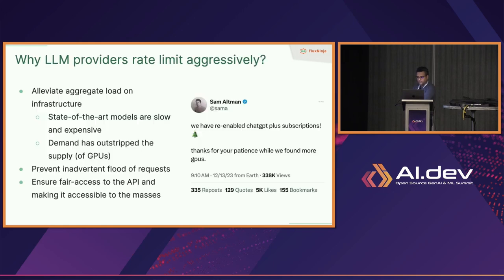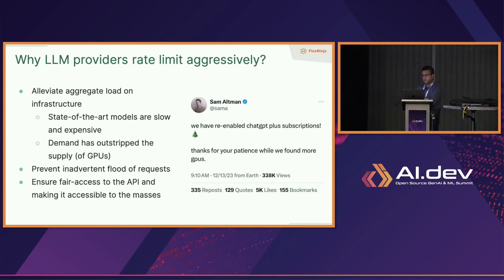That latency is the root cause for a lot of the problems we're seeing on the provider side. Providers like OpenAI are rate limiting very aggressively. Chat GPT had been put on a waitlist for several weeks due to a shortage of GPUs — it's understandable, because these APIs are very hard to scale. The demand has outstripped supply, the workloads are very heavy, they need a lot more compute, and these state-of-the-art models are really slow and very expensive.